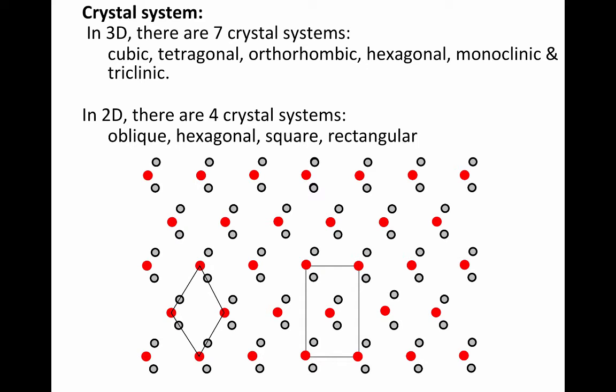And in 2D, there are only four crystal systems: the oblique, hexagonal, rectangular, and square systems.